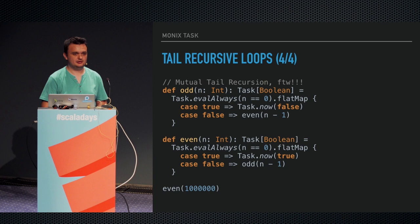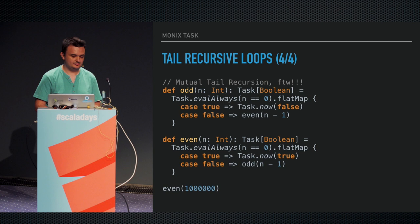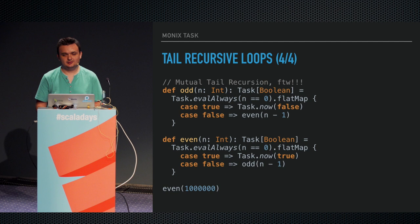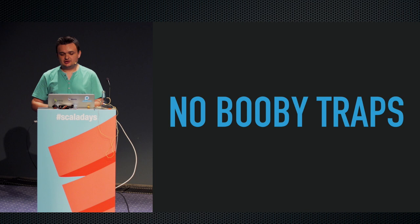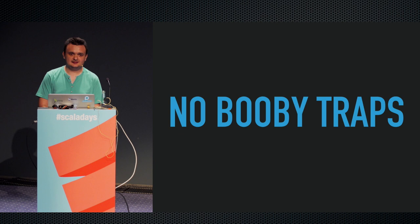You can also do mutual tail recursion. In functional programming you end up with functions that describe states in a state machine — the functions themselves are state, and the function calls are transitions. This happens especially in compiler implementations. Task can handle manual tail recursion as well. As a project policy — referencing ScalaZ task — this task implementation does not expose booby traps, meaning especially stack overflow errors.